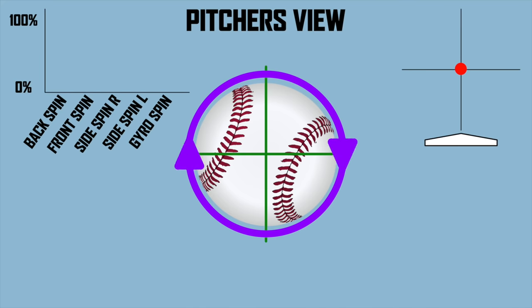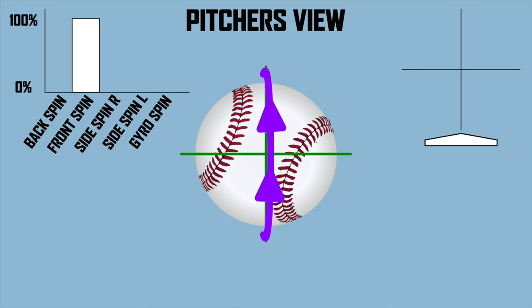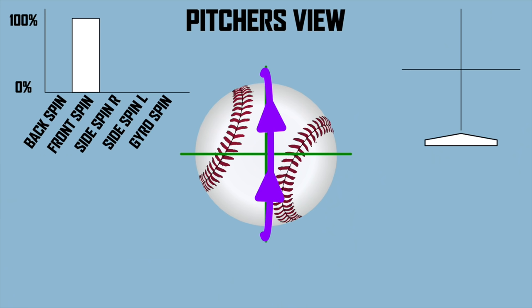I have backspin, front spin, side spin to the right, side spin to the left, and gyro spin shown in the top left corner. It's important to talk about the absolutes - 100% gyroscopic spin, 100% backspin, or 100% side spin - because then we'll start mixing them. What if the ball is spinning like this? The back of the ball is spinning up and the front is spinning down. When talking about anything but gyro spin, it's the direction the front of the ball is spinning that matters. This would be a dead 12-to-6 curveball - the front spinning from 12 to 6 - producing movement straight down.